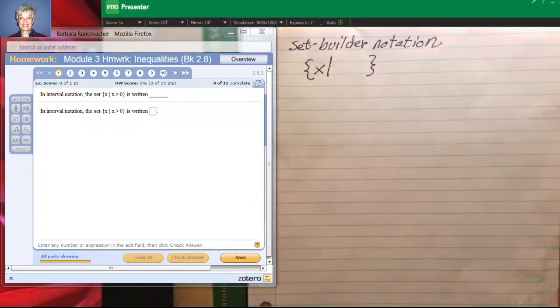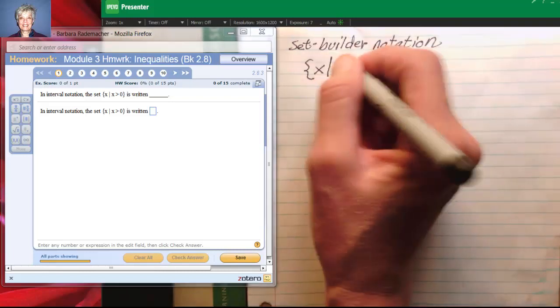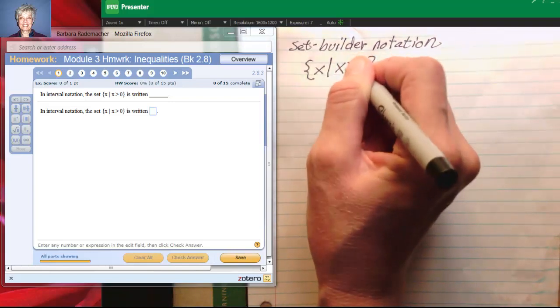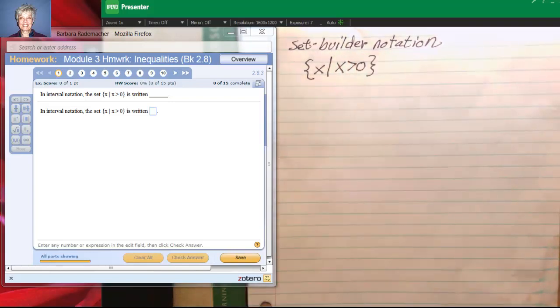Now we're going to stipulate such that what? Such that x, a number I don't know, is greater than zero. In other words, you're talking about all the positive numbers, all the numbers that are greater than zero.